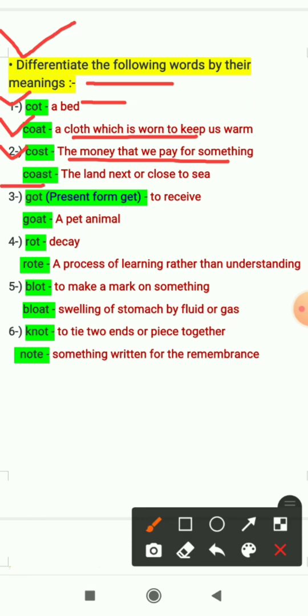The next word is coast. It is the land next or close to sea, the bank of the river or the bank of the sea. Third word is got, its present form is get and it means to receive. Another word is goat, it is a pet animal.